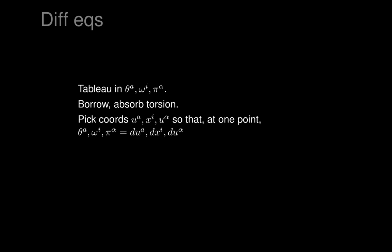We pick coordinates — they can be picked arbitrarily. We call them u_a's corresponding to the thetas, x_i's corresponding to the omegas, and u_alphas corresponding to the pi's. There's already a curiosity here: why are we thinking of the thetas and pi's as the same sort of variables? Intuitively, the omegas correspond to independent variables, and everything else corresponds to dependent variables.